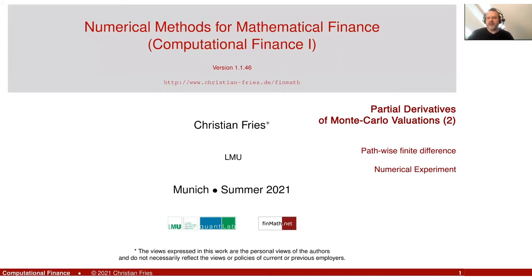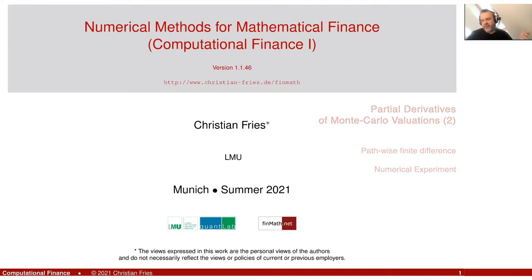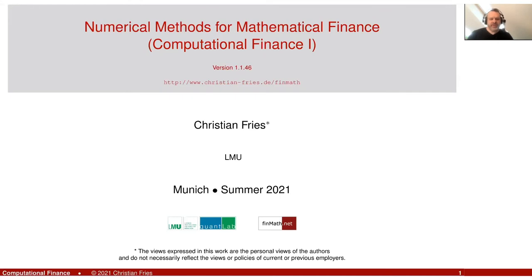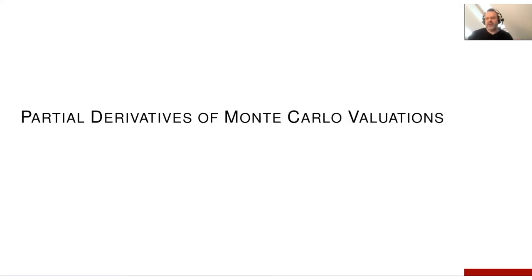Hello everybody. In this session of numerical methods, I'd like to continue discussing approximating partial derivatives dV by d-theta, where theta is some parameter, of a valuation V obtained using the Monte Carlo method. Because the Monte Carlo method has some subtle issues. We already discussed this in the last session: partial derivatives of Monte Carlo valuations.